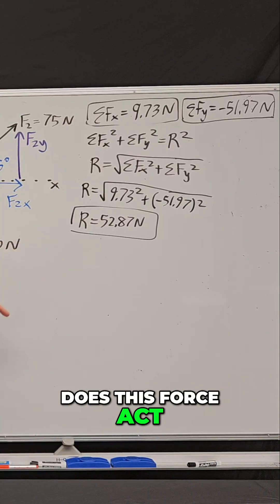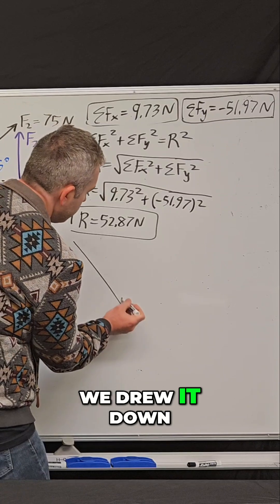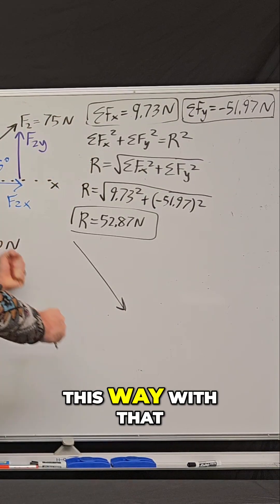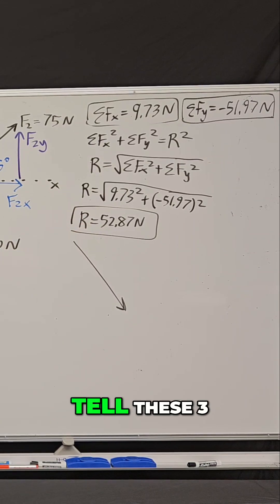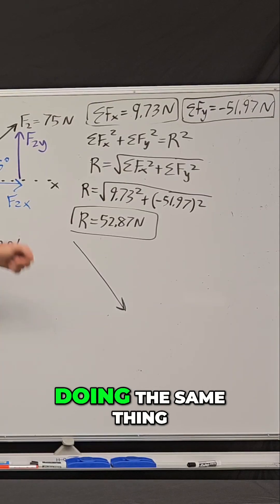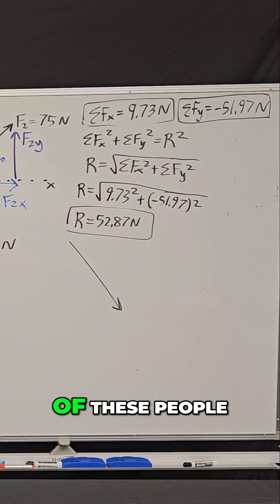But which direction does this force act? Remember in our diagram, we drew it down and to the right. So that means if you pulled this way with that much force, you could actually tell these three people to go home because this one person would be doing the same thing to this box as all three of these people.